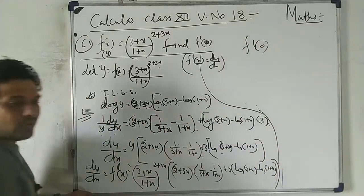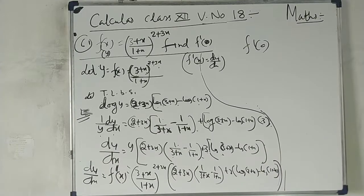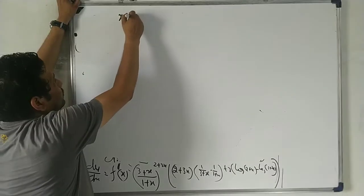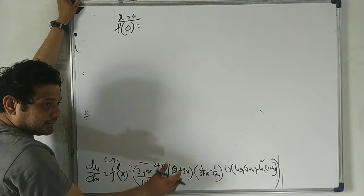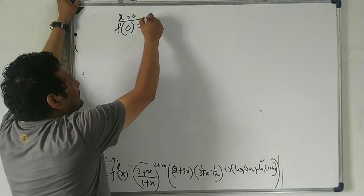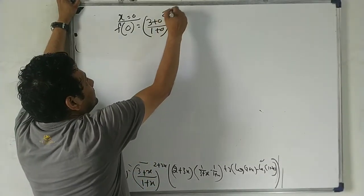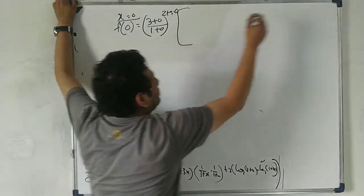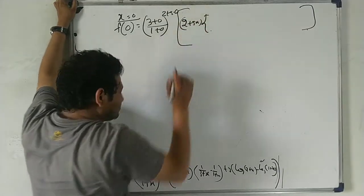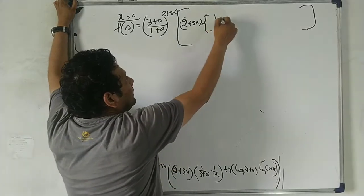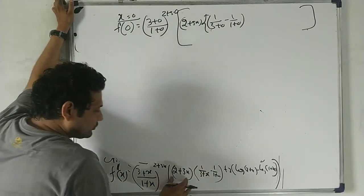To find f'(0), wherever there is x, we put zero. So substituting x = 0: the outside term y becomes (3+0)^1 × (1+0)^(2+0) = 3. Inside, (2+3×0) × [1/(3+0) − 1/(1+0)] — this portion is done.